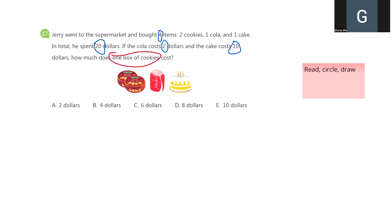So how can we draw this information out to help us better solve this? Let's see. First, we know he bought 4 items, right? There are 2 cookies and 1 cola and 1 cake.